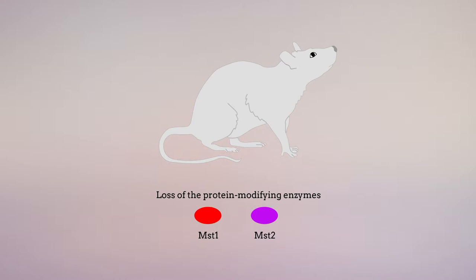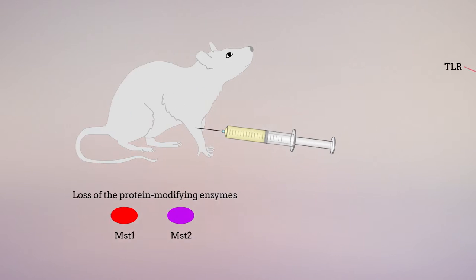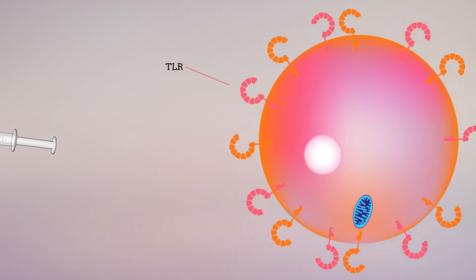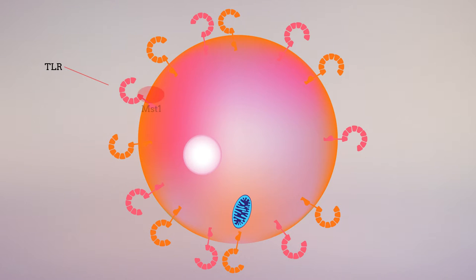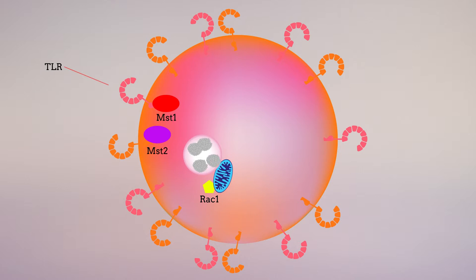For this purpose, the researchers used immune cells harvested from mouse bone marrow, a common model used to study immune cell function. Stimulating TLRs at the cell surface activated MST1, ultimately increasing ROS production. Activating MST1 and MST2 also moved mitochondria next to phagosomes by facilitating the formation of the phagosome-mitochondria protein complex.